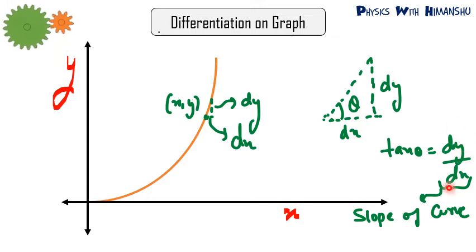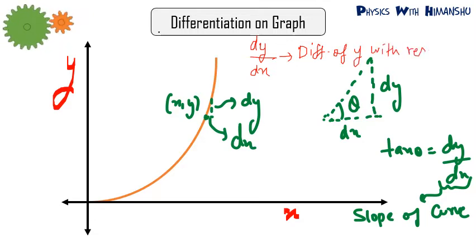Tan theta is the slope of the curve, so tan theta is basically dy by dx. This is known as differentiation of y with respect to x. Always remember: dy upon dx means differentiation of y with respect to x. The quantity with which you are differentiating comes in the denominator, and the quantity you are differentiating comes in the numerator. Differentiation is also called the slope of the curve.